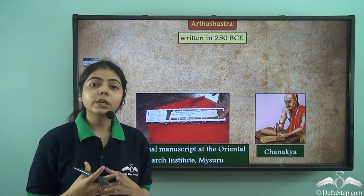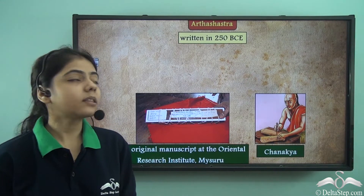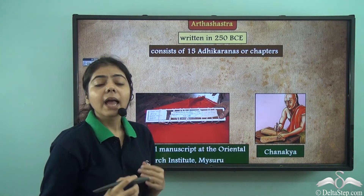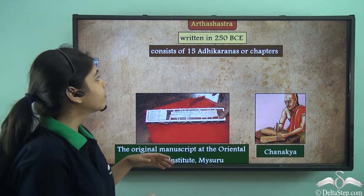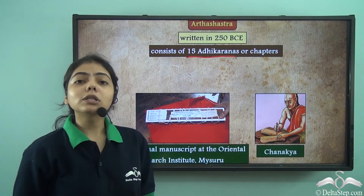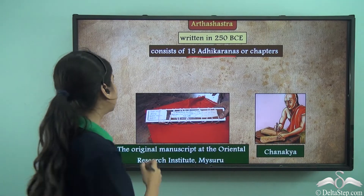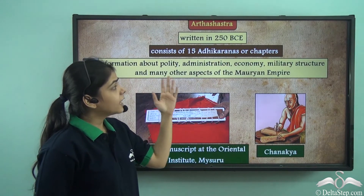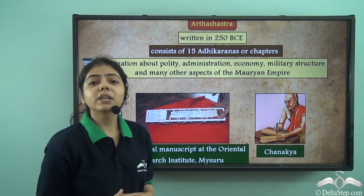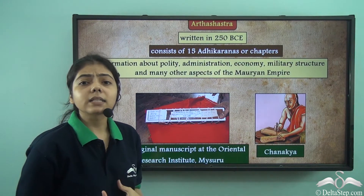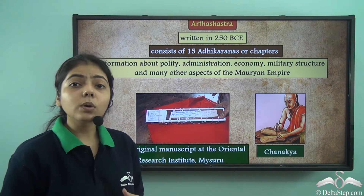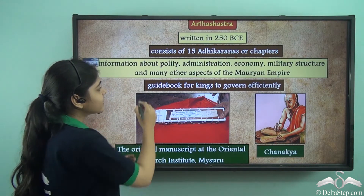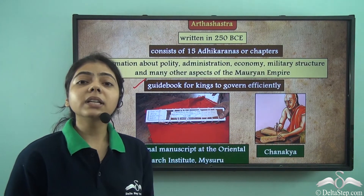Another literary source is the Arthashastra. It was written in 250 BCE by Chanakya, also known as Kautilya. The Arthashastra is composed of 15 Adhikarans, or chapters, and talks about the polity, administration, economy, military structure, and many other aspects of the Mauryan Empire. It also tells us how a king should properly govern his entire administration, serving as a guidebook for kings on how to govern the empire efficiently.